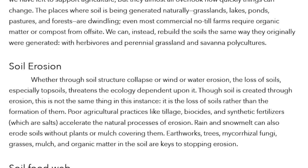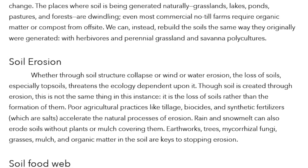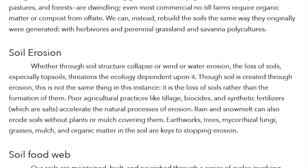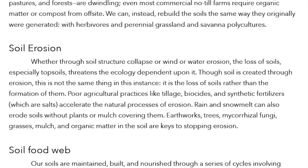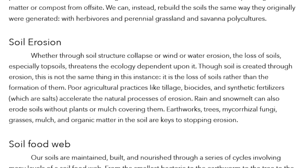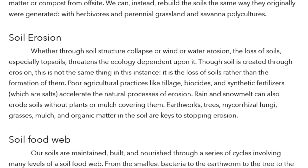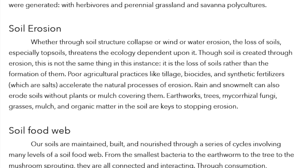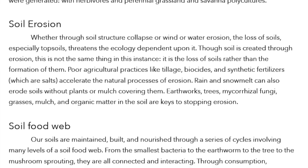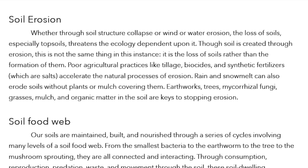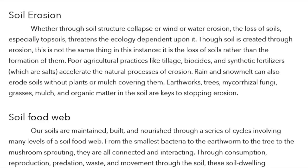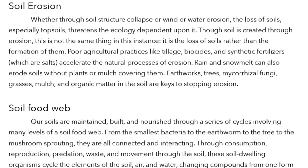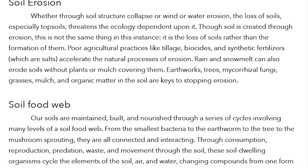Soil Erosion. Whether through soil structure collapse or wind or water erosion, the loss of soils, especially topsoils, threatens the ecology dependent upon it. Though soil is created through erosion, this is not the same thing — it is the loss of soils rather than the formation of them. Poor agricultural practices like tillage, biocides, and synthetic fertilizers, which are salts, accelerate the natural processes of erosion. Rain and snowmelt can also erode soils without plants or mulch covering them. Earthworks, trees, mycorrhizal fungi, grasses, mulch, and organic matter in the soil are keys to stopping erosion.